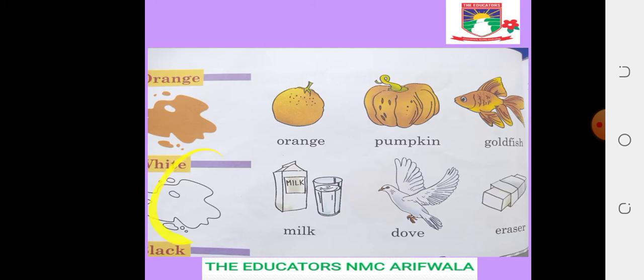Then, white: W-H-I-T-E, white. Milk: M-I-L-K, milk. Dove: D-O-V-E, dove. Eraser: E-R-A-S-E-R, eraser. Our milk, dove, and eraser - which color? White color.